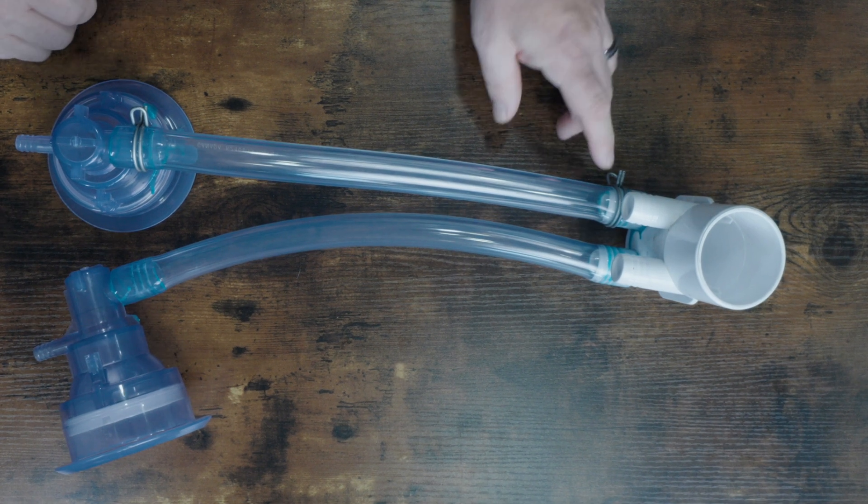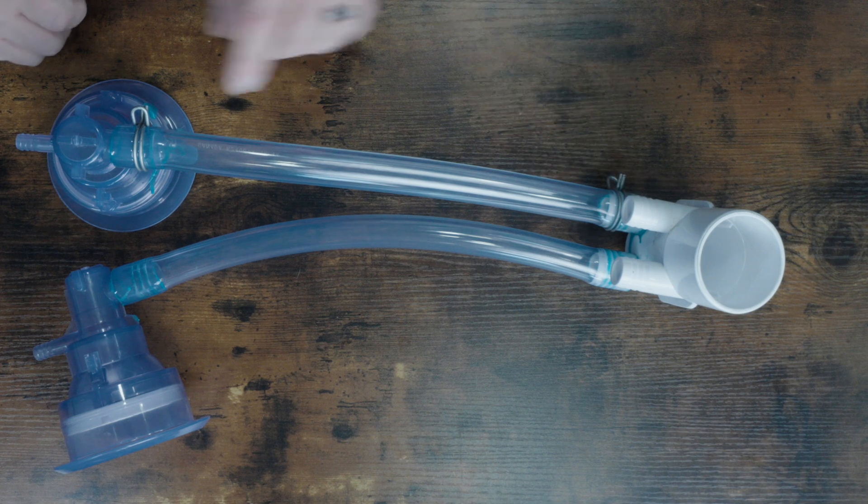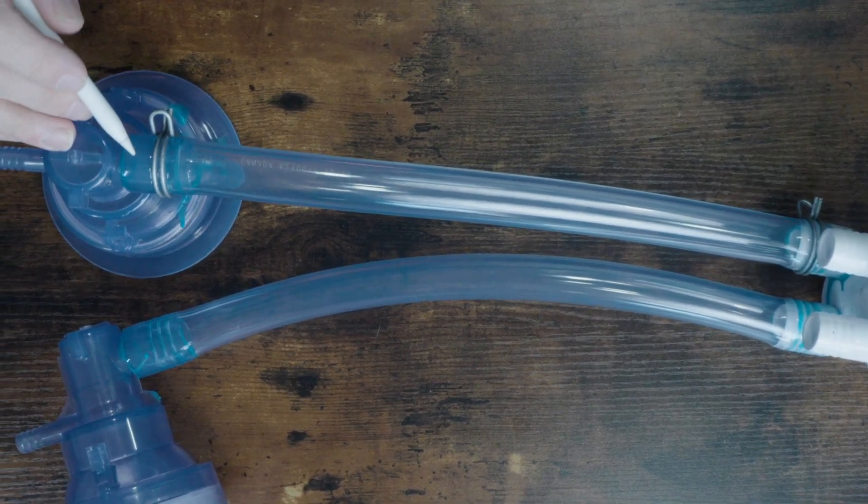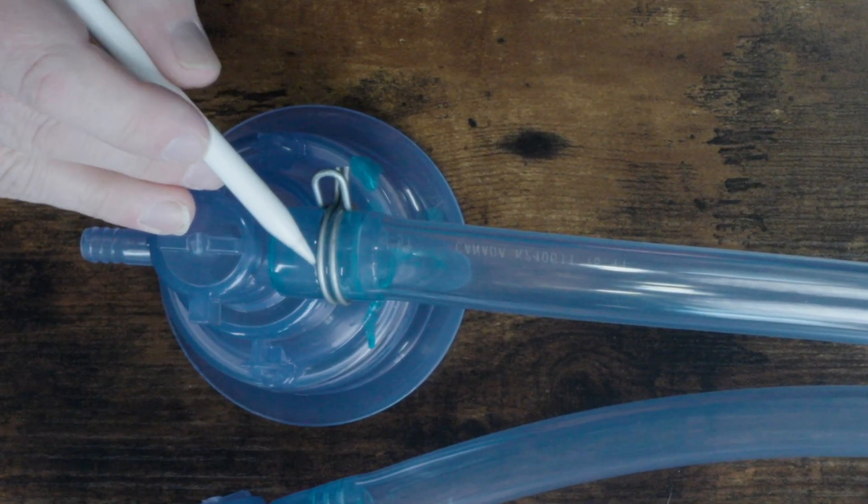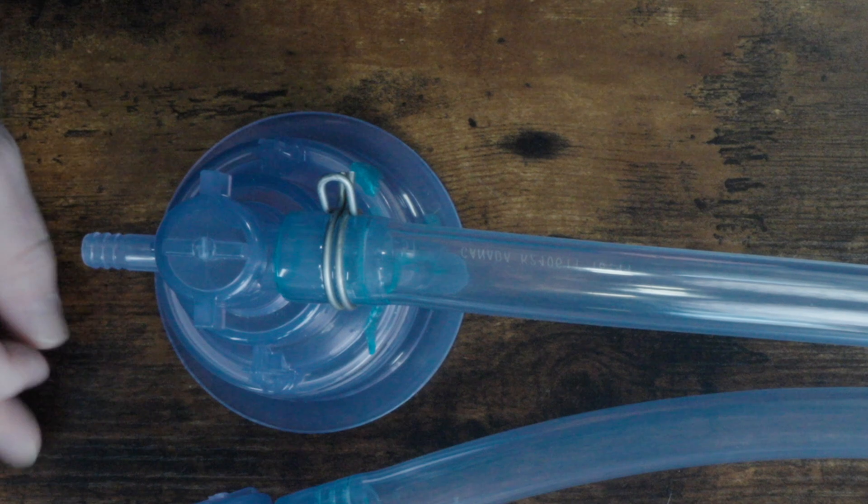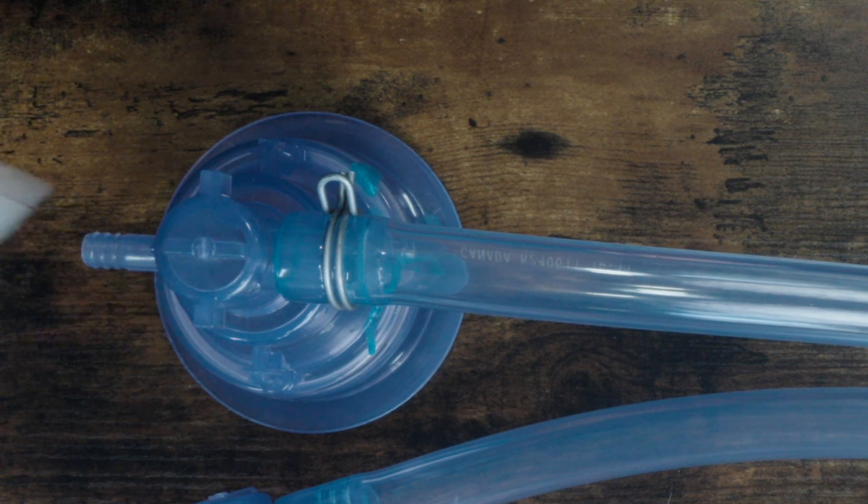On the other hand, a properly clamped line is never going to leak. If you look closely at this end of the line, you can see where the clamp has actually created an impression in the hose. It's actually crimped it onto the jet fitting, and there is no way that water is going to work its way past this clamp.